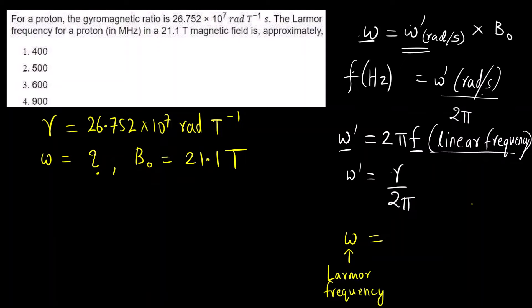Larmor frequency or precessional frequency means the proton spins around its axis, it spins like a top, that is the meaning of Larmor frequency. This is gamma by 2 pi. What is gamma? Gamma is the gyromagnetic ratio or magnetogyric ratio, multiplied by B naught. This final answer that we get will be in Hertz.